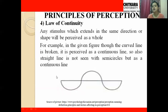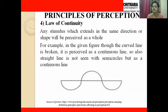Next is the law of continuity. It states that any stimulus which extends in the same direction or shape will be perceived as a whole. For example, in a given figure where a curved line is broken, it is still perceived as a continuous line. Also, a straight line is not seen together with a semi-circle but as a continuous line. We see two lines — one straight and one curvy — moving in a particular direction. We don't say the curved line is broken or that there are three semi-circles; we perceive them as two distinct continuous lines.